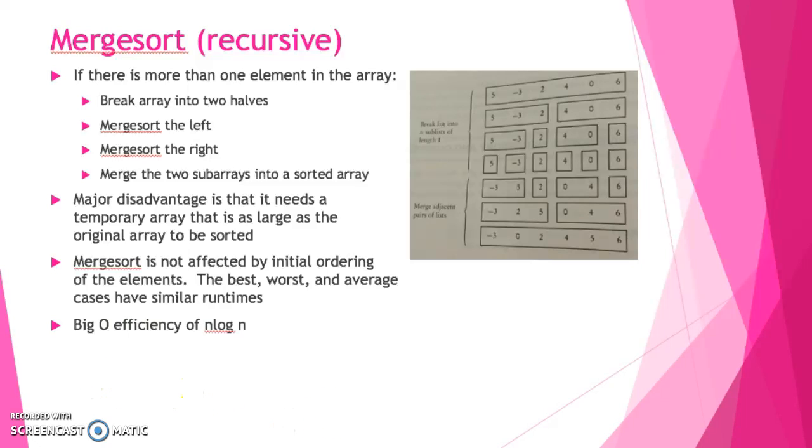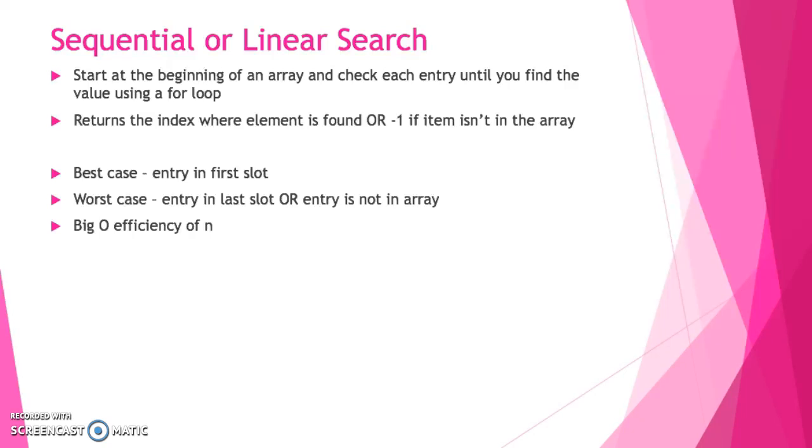Let's talk about some of our searching algorithms. The first one we studied is our sequential or linear search, and this is the most basic of basic searches. Here we use a simple loop, and we begin at the first index and we go through and we check each entry until we find what we're looking for. Typically in a linear search, we will return the index where the value is found, or we return negative one if the value is not in the array. The best case for a linear search is that the entry's in the first slot. The worst case is that it's either in the last slot or it's not in there. For that reason, the big O for a linear search would be n, because if the array has 20 elements, the worst case would be that we had to check all 20 of them.